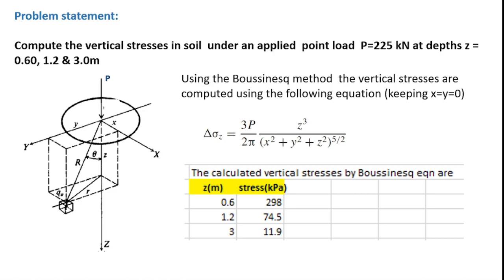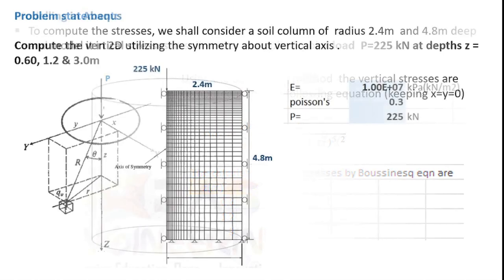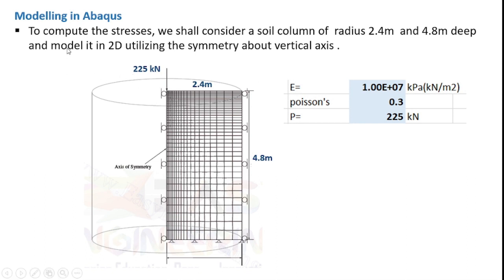We shall verify these values using Abaqus. To compute the stresses, we shall consider a soil column of radius 2.4 m and 4.8 m deep. To model this soil column, we shall make use of the symmetry about the vertical axis and model it in 2D. The soil will be modeled as an elastic material with E equal to 1×10⁷ kN per m², Poisson's ratio of 0.3, and a concentrated load p will be set as 225 kN.